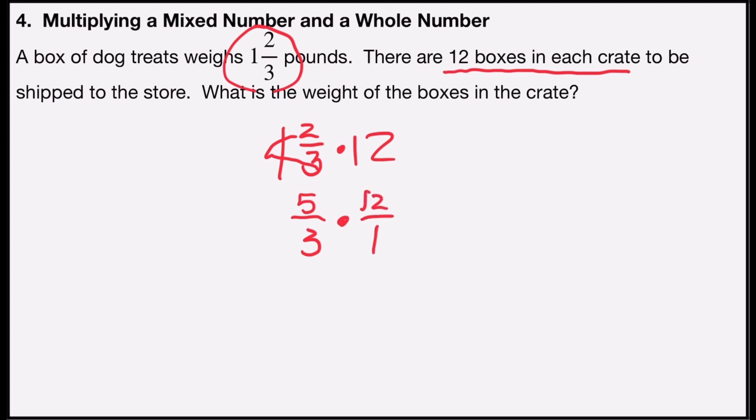Multiply across the bottom: three times one is three. 60 divided by three is actually a clean division. 60 divided by three tells me that there will be 20 pounds of dog treats in the crate.